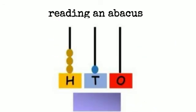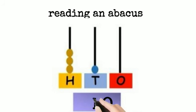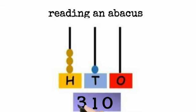In the ones place there are no beads, so put 0 there. In the tens place there is 1 bead, so write 1. In the hundreds place there are 3 beads: 1, 2, 3 — so write 3. What is the number? Three hundred and ten — 310.